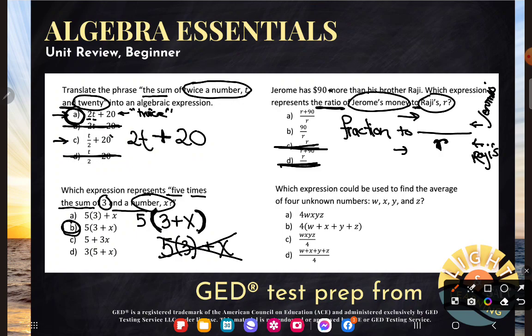So it says Jerome has $90 more than his brother Raji. Now, don't stop your reading right here and say Jerome has $90. If Jerome just had $90, yeah, my ratio would be $90 to R. But he doesn't have $90. He has $90 more than Raji. He has what Raji has plus another $90. That says $90 more than Raji. Don't let it freak you out that there's two R's in this expression. We have Raji's R. But then we have Jerome's amount, which is $90 more than Raji. So yes, R appears twice.